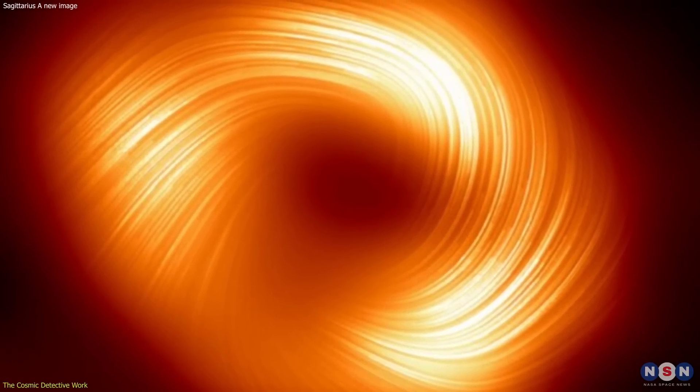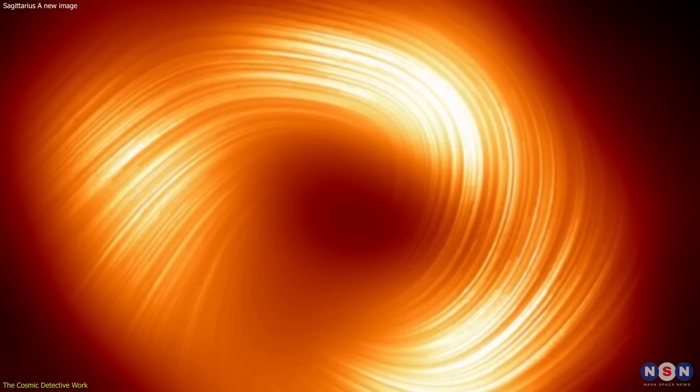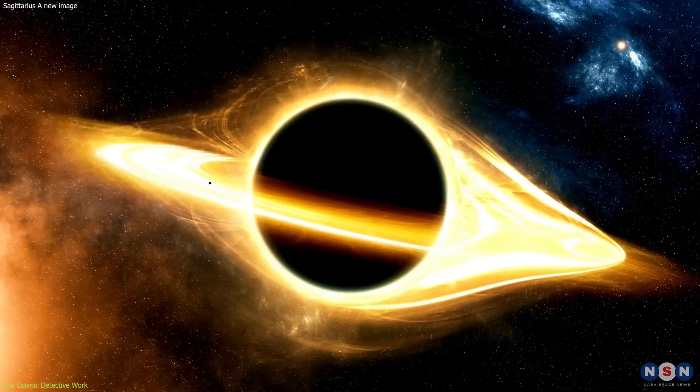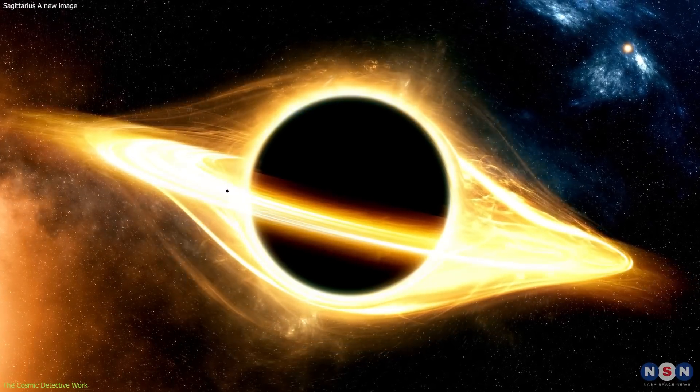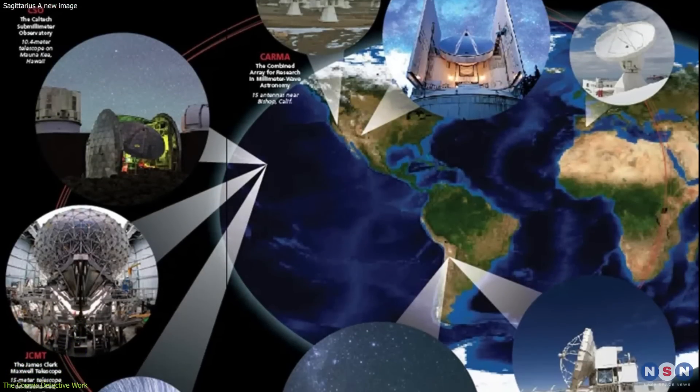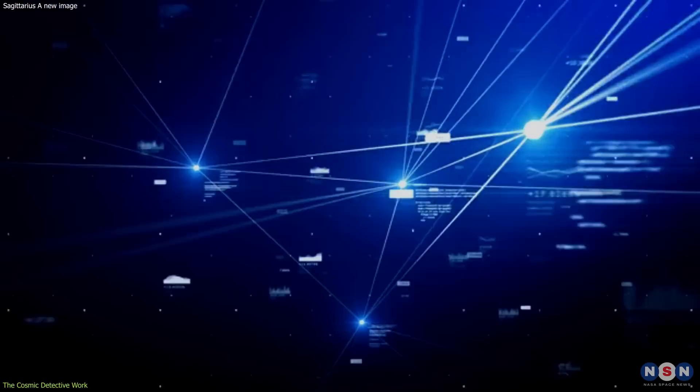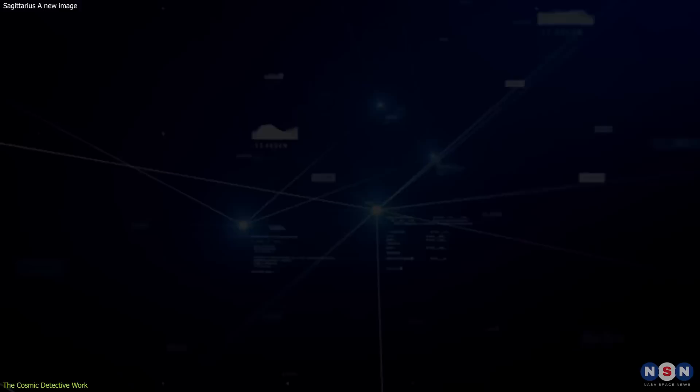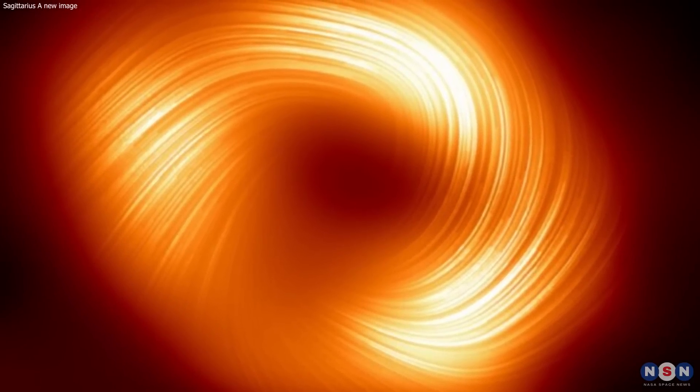This image, a bright ring surrounding a dark void, was a landmark achievement. It provided the first direct visual evidence of a black hole's existence. But the Event Horizon Telescope's mission didn't stop there. The team continued to analyze the data, delving deeper into the mysteries of the black hole's surroundings.